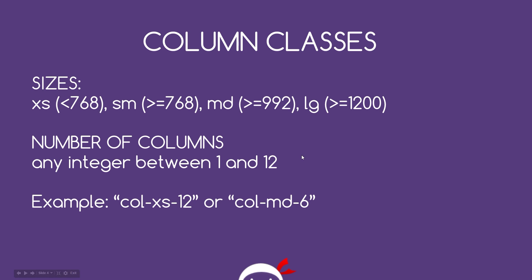The number of columns can be any integer between 1 and 12, because that's how many columns Bootstrap gives us to work with. For example, a class of 'col-xs-12' means you're targeting extra small devices — less than 768 pixels — and you want the element to be 12 columns wide, which is the full width of the grid. Another example: 'col-md-6' targets medium screens at 992 pixels or over, and sets the element to six columns wide, which is half the grid.